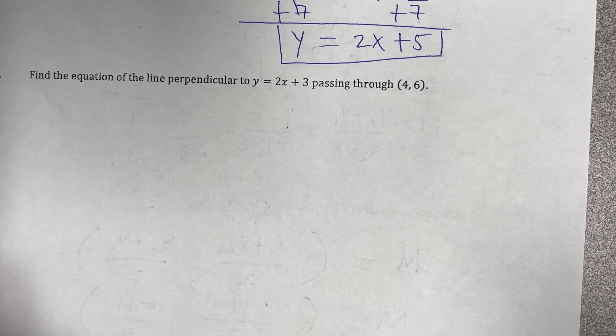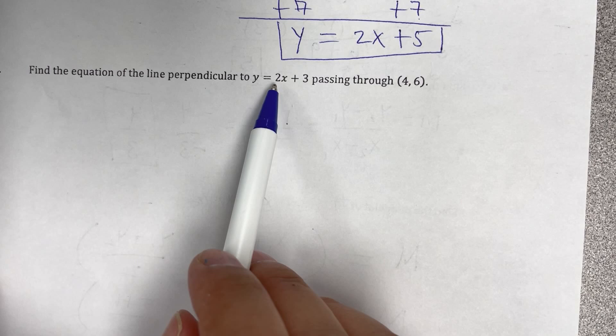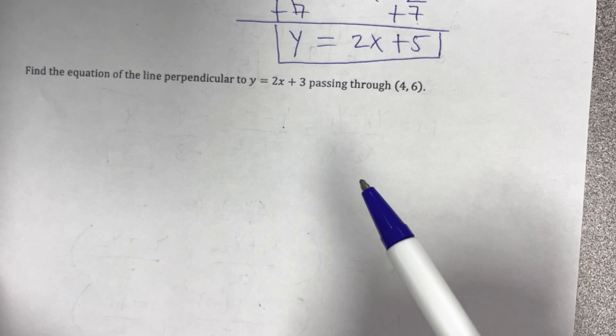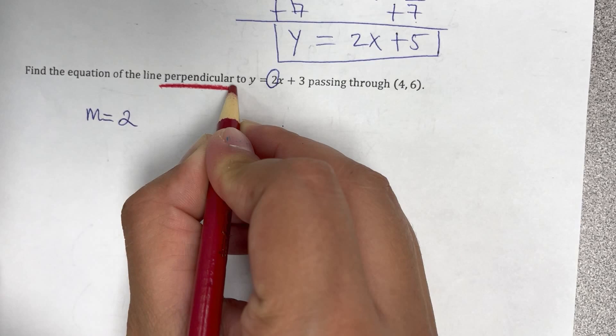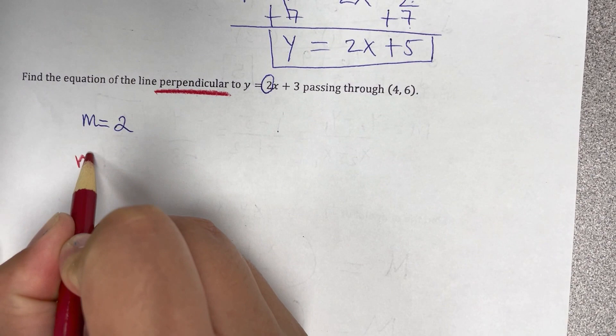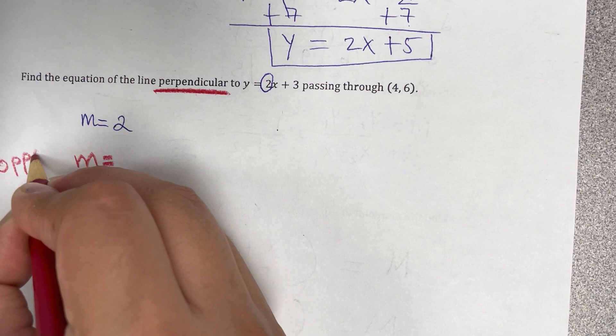Number 8. Find the equation of the line perpendicular to y equals 2x plus 3, passing through 4, 6. So aquí, we already learned that the slope is the coefficient of x. However, we have to be careful. Aquí dice perpendicular. Cuando es perpendicular, no se puede utilizar el mismo slope. Tiene que ser opposite, reciprocal.